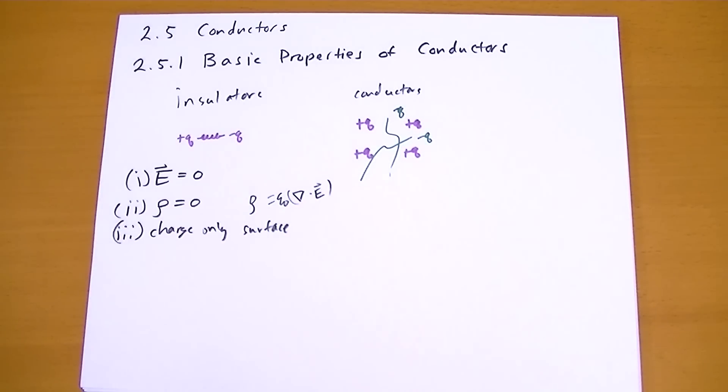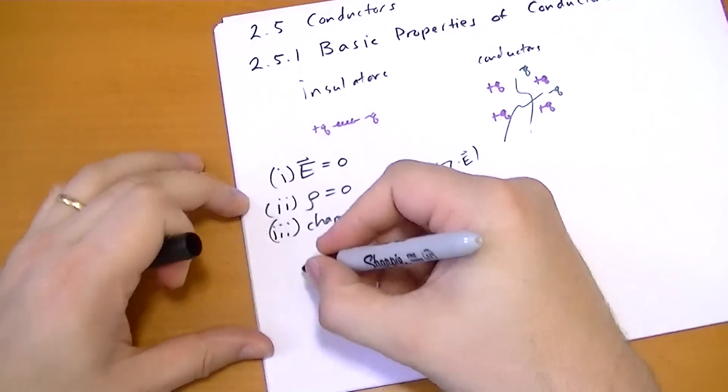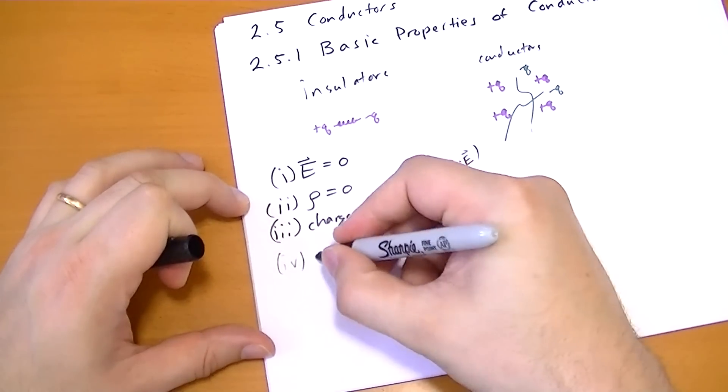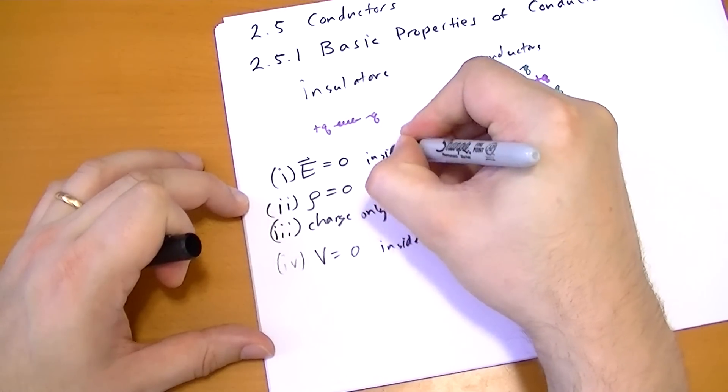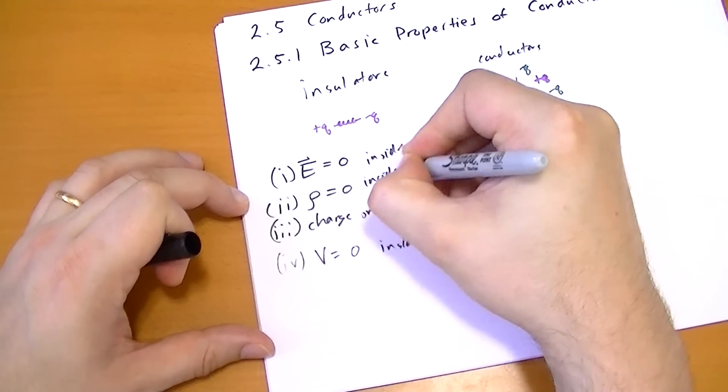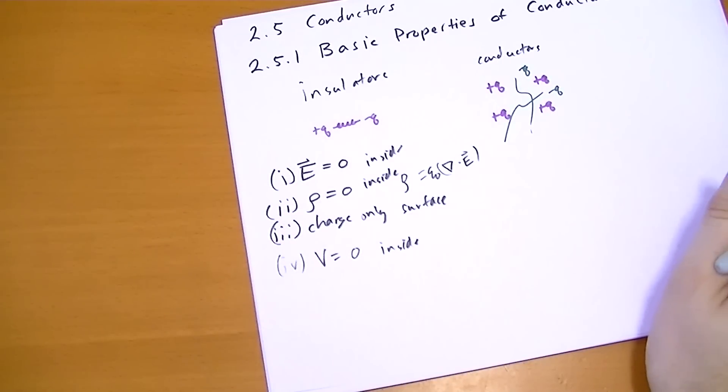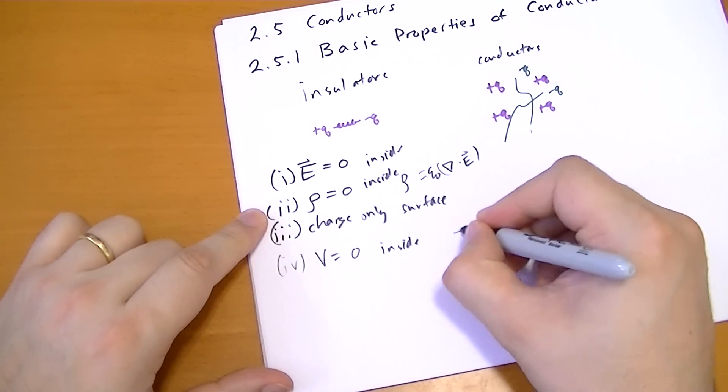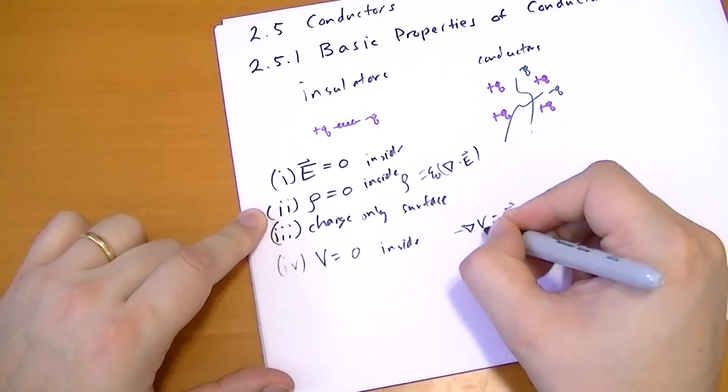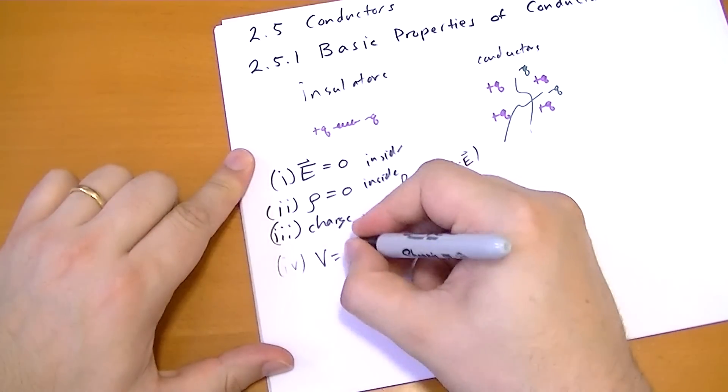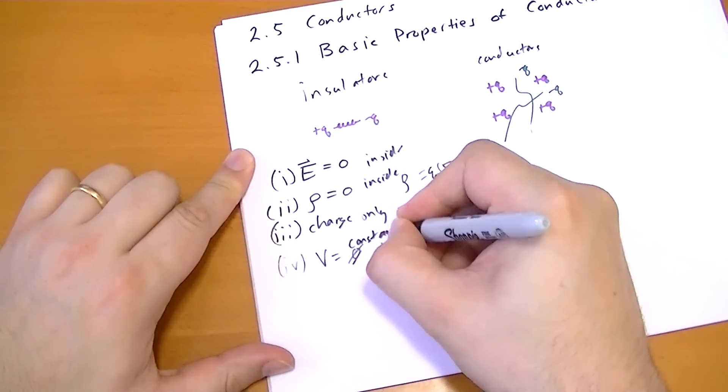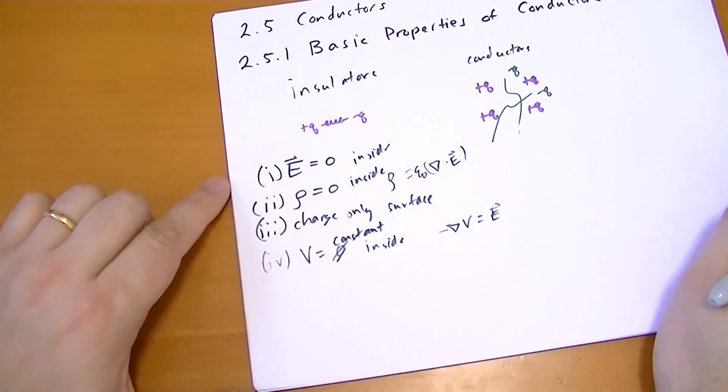So the other interesting thing is since the electric field is zero, the potential is also zero inside. This is all inside, by the way. And that's because the potential is, the gradient of the potential is zero. So the potential isn't constant. It's not zero. It's constant inside. So the potential doesn't change.